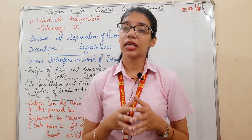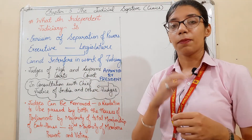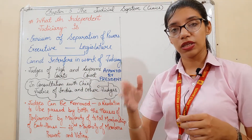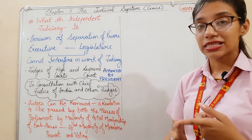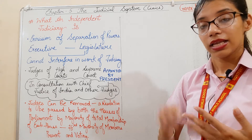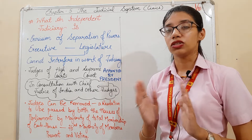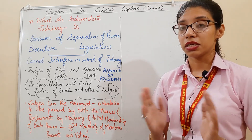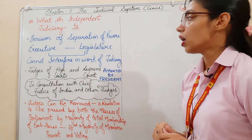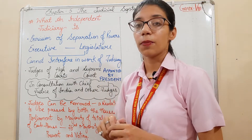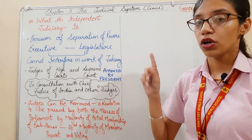The Constitution of India has provided us an independent judiciary. The legislative, executive, and judiciary exercise different powers — that comes under the separation of powers. They keep a check on each other, an eye on each other that every organ is working properly or not. There is a provision of separation of power, and the executive and legislature cannot interfere in the work of the judiciary.